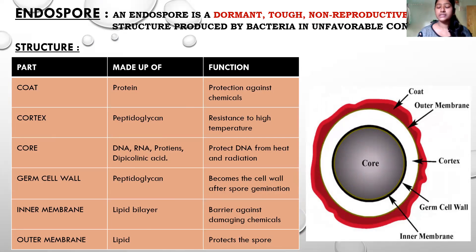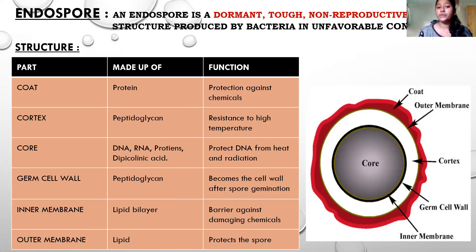In this diagram, I am sharing that there are various parts of Endospore, each with particular functions. The coat is made up of protein and keratin; its function is to protect the spore against chemicals. The cortex is made up of a peptidoglycan layer; its function is to give resistance to the spore from high temperatures.